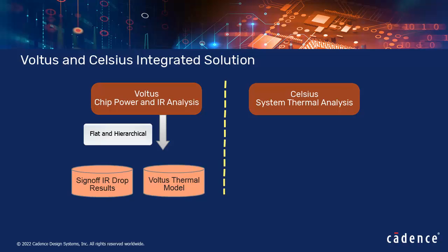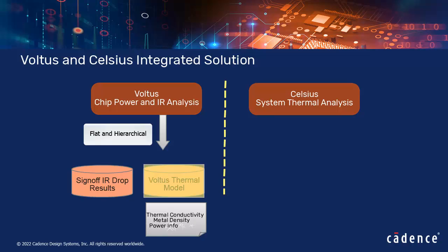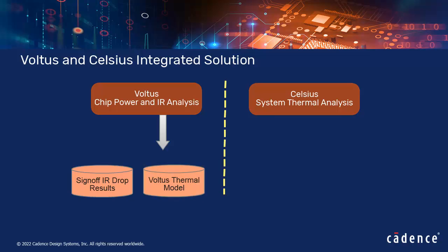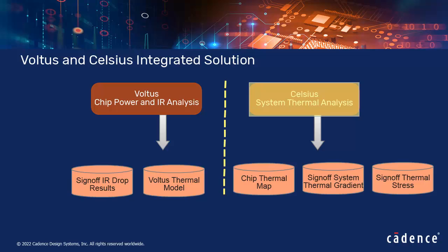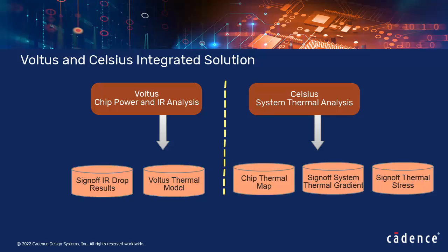In addition to IR drop results, Voltus generates chip thermal models that contain thermal conductivity information, layer-based metal densities, and temperature-dependent leakage power and dynamic power information. The chip thermal model can be read into the Celsius thermal solver to perform chip or full system thermal analysis. Celsius then generates a temperature map per die for Voltus to perform thermally aware IR drop analysis.